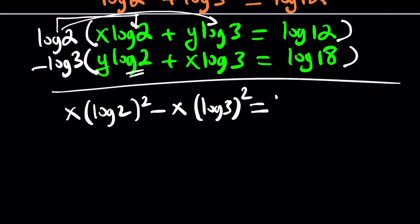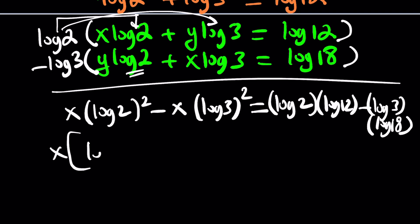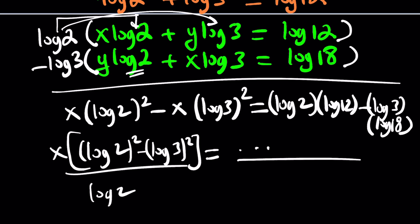So let's go ahead and multiply the top equation by log 2. And so that's going to give us the coefficient of y as log 2 times log 3. So we do need the log 3, but that should be a negative sign so that they can cancel out. And we're going to end up with something like this. If you go ahead and distribute and subtract, you should be getting something like x times log 2 squared minus x times log 3 squared equals. You're going to be multiplying, y cancels out. Log 2, log 12, minus log 3, log 18.